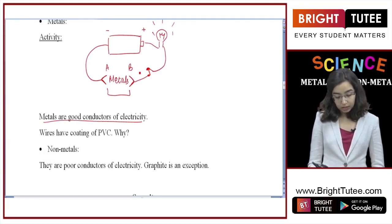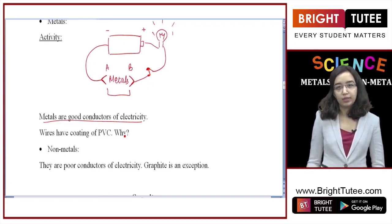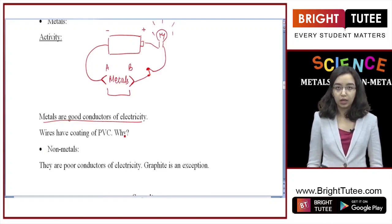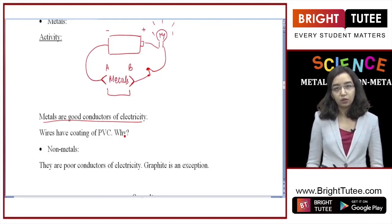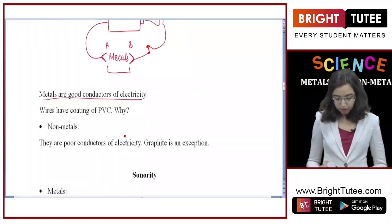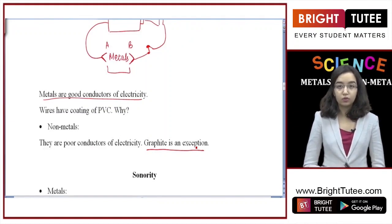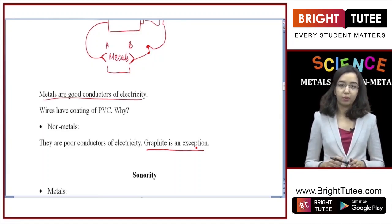Another question that can be asked is why electric wires made of copper and other metals have an outer covering of PVC. This is because the human body is also a good conductor of electricity, and when we come in contact with a wire we can receive current from the circuit, which could potentially harm us. That is why there is a covering of a non-conductor around the wire to protect humans from coming in contact with strong electric current. An exception among nonmetals is graphite, which is also used to make electrodes because it is a good conductor of electricity — an exception to the general pattern shown by nonmetals.